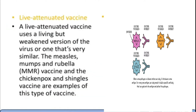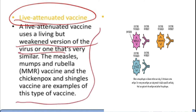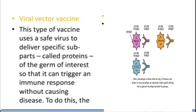A live attenuated vaccine uses a living but weakened version of the virus or one that is very similar. Measles, mumps, rubella vaccines and chicken pox and shingles vaccines are examples of live attenuated vaccines.